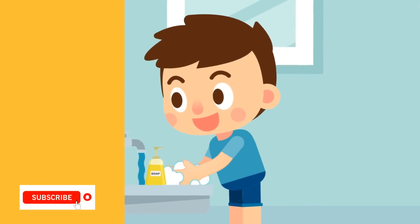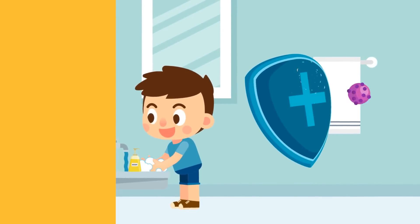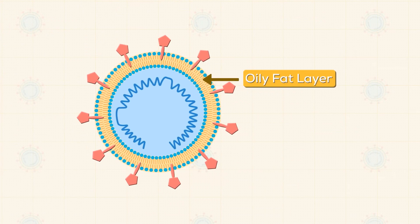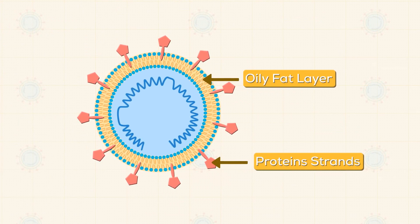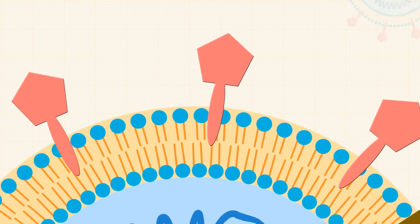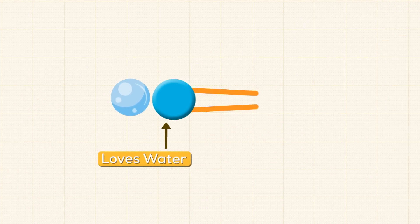All viruses have a skin of oily fat layer which have protein strands in between them, which helps the virus to infect cells. These fat layers have water-loving polar heads.